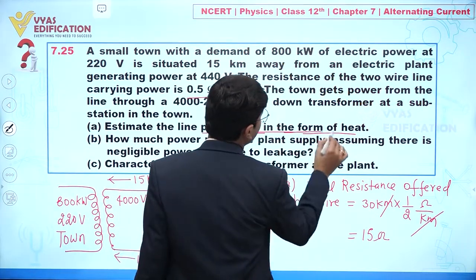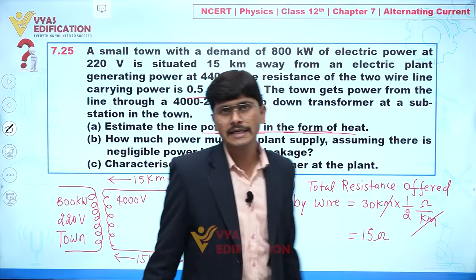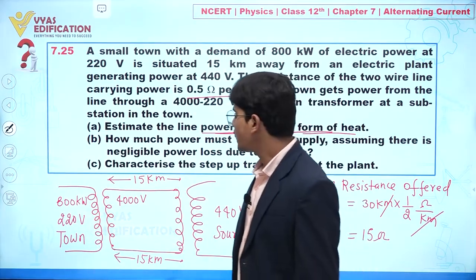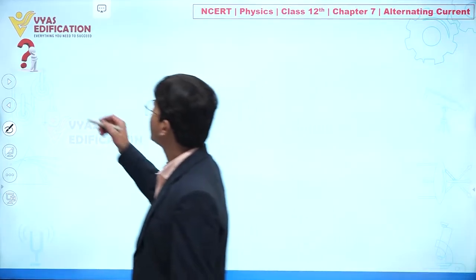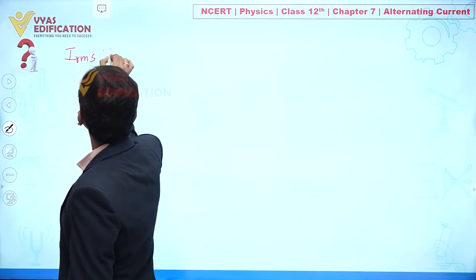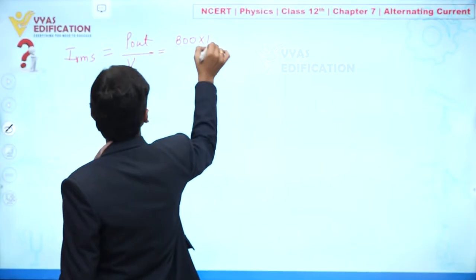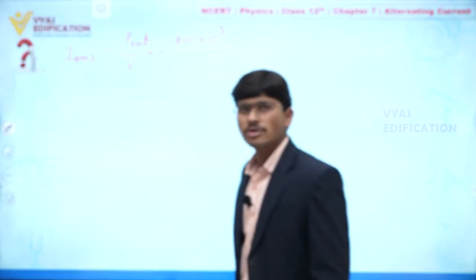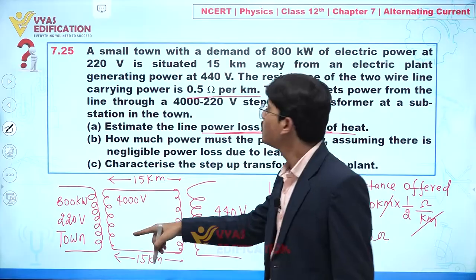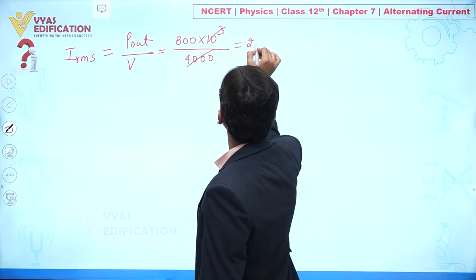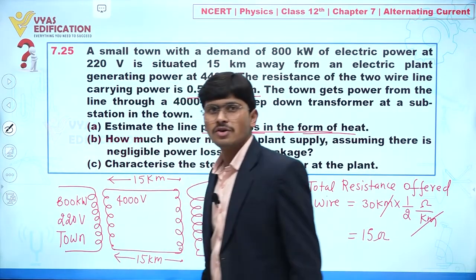Now our objective is to find the power loss in the form of heat. The output power needed is 800 kilowatt. We can find I_rms using: I_rms = Power output / Voltage = 800 × 10³ / 4000 volt. The kilowatts cancel and we get I_rms = 200 ampere.